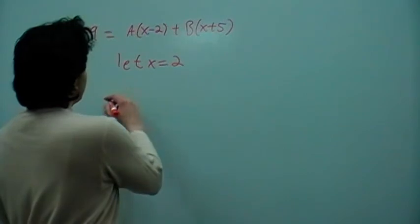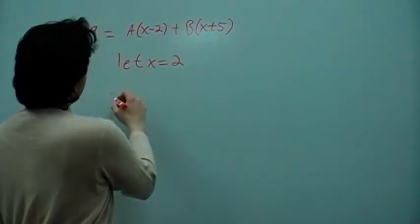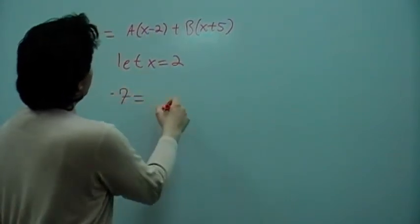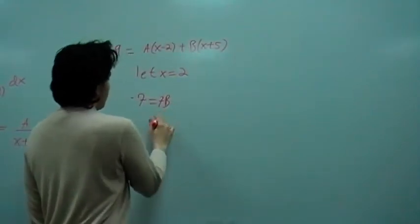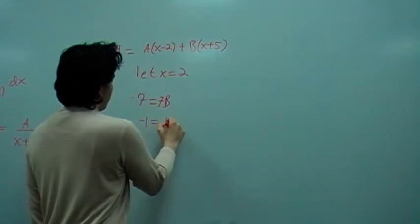Okay, from here, we're going to substitute 2 on both sides. So after you substitute 2, you're supposed to get minus 7 equals B of 7, because after the computation, you'll have B equals minus 1.